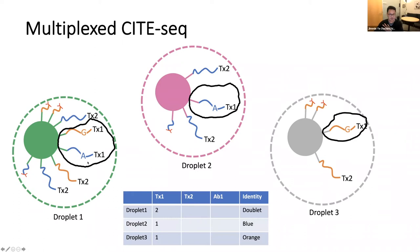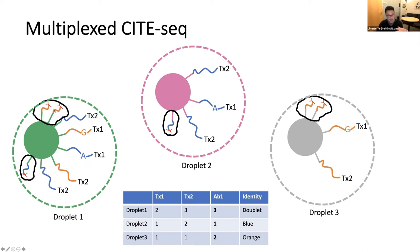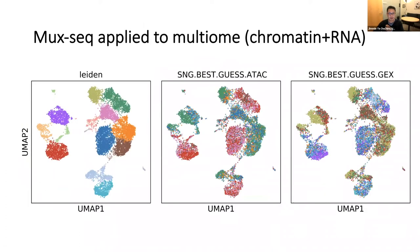Droplet one contains cells from both individuals. Demuxlet works by looking at genetic variation — we only need a limited amount. Because cell barcodes are associated with each molecule, even if only a single transcript carries genetic information enabling demultiplexing, we can still gain information about other transcripts and antibody counts linked to the same cell barcode. So even without genetic information about the antibodies or other transcripts, we can still correctly assign abundances to the individual.